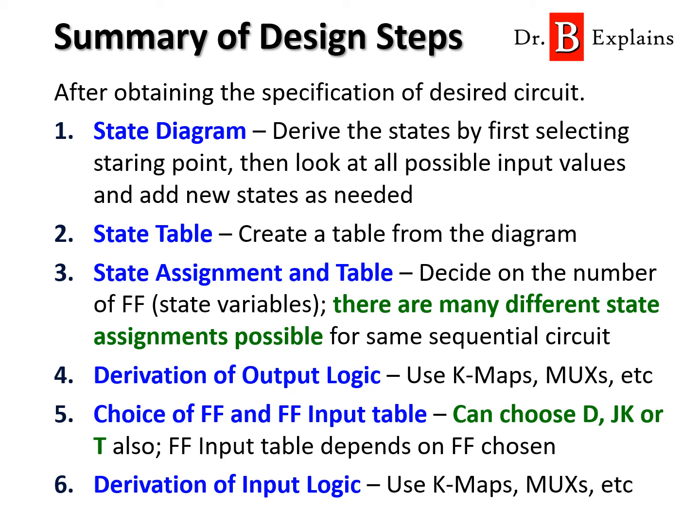We then derive and design the output logic. We can use K-maps or combinational circuits, blocks like multiplexers and encoders. In step 4, we can also do it after the input logic is derived. We then need to select the flip-flop types that we are going to use, whether JK, D, or T flip-flops. We can create a flip-flop input table — we also call this the excitation table. Finally, we can derive the input logic circuit. Again, we can use K-maps or combinational circuit blocks.